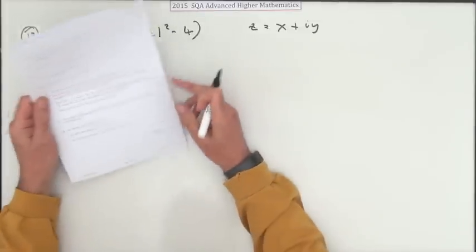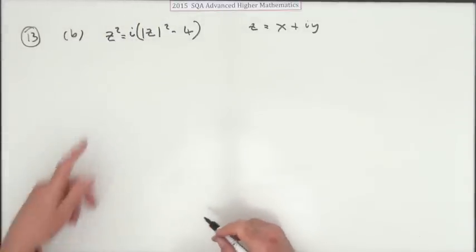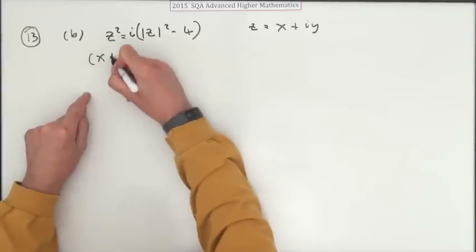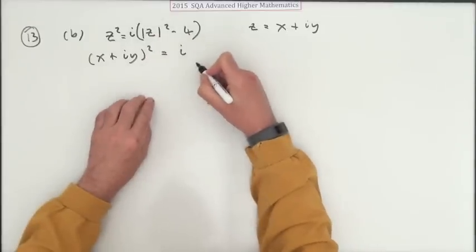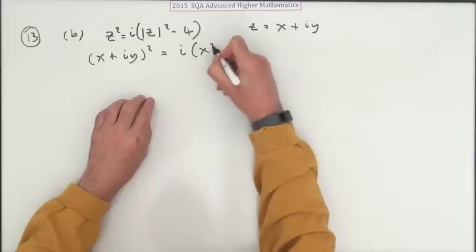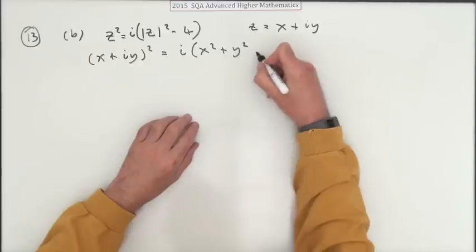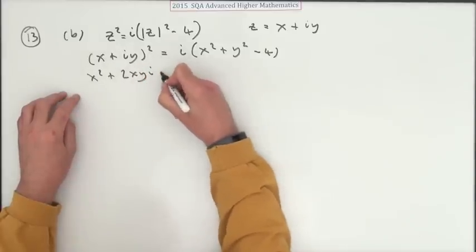Now with part B, it just changes the other side into a completely imaginary part. I've already missed what I had there. Put it down again. (x + iy)² = i times... oh, I forgot what it was... x² + y² obviously, for the square of the modulus, minus 4.